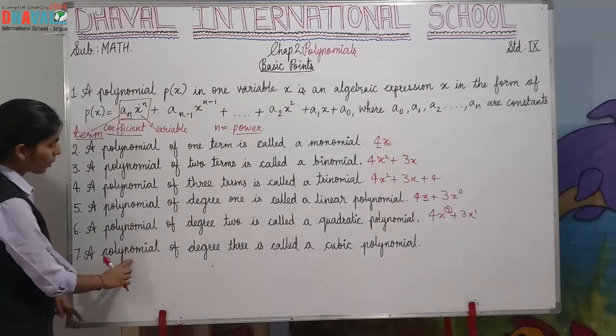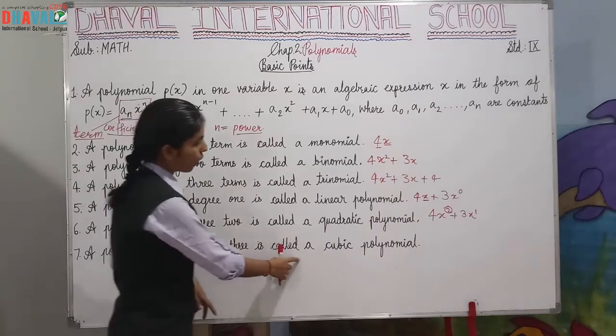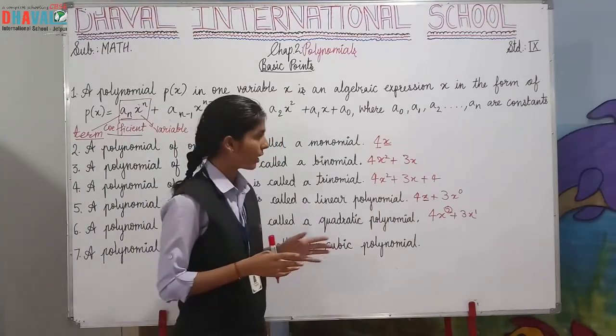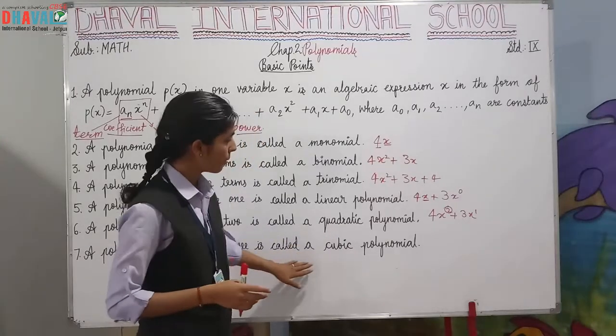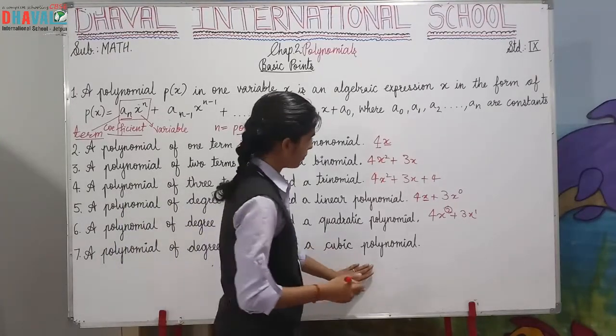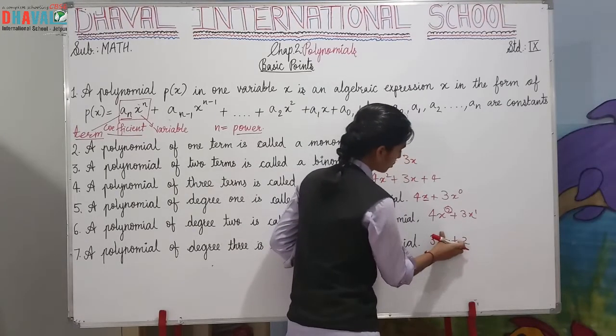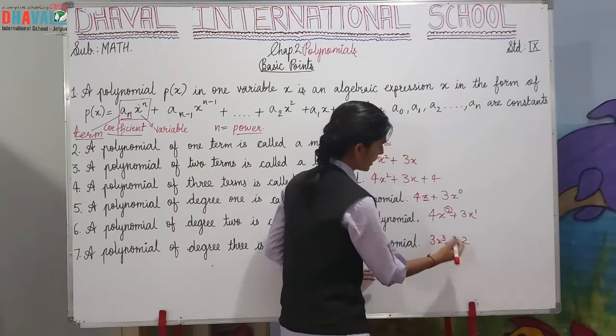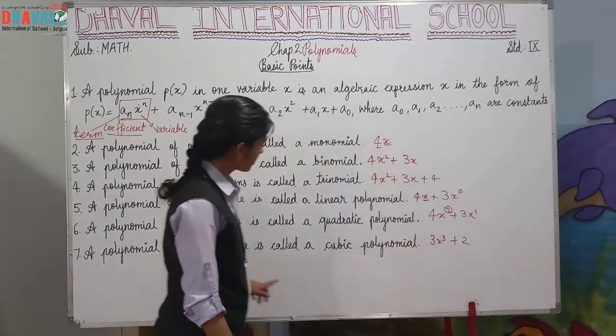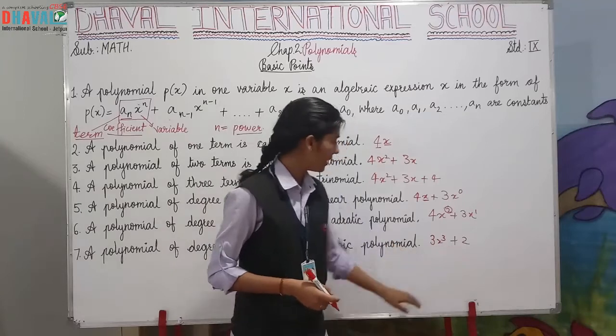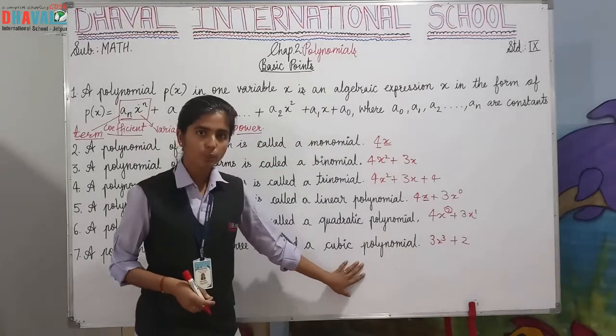Last one: a polynomial of degree 3 is called a cubic polynomial. For example, the degree here will be 3, so x to the power of 3. The highest degree is equal to 3, so it will be a cubic polynomial.